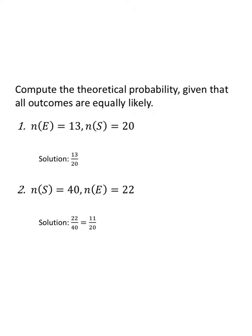But don't get in a hurry because if n(S) is 40 and n(E) is 22, don't just assume you're gonna put 40 over 22. Remember probabilities are always between 0 and 1. So 22 out of 40 or 11 out of 20. If you wanted that in a decimal that would be 0.55, a 55% chance.